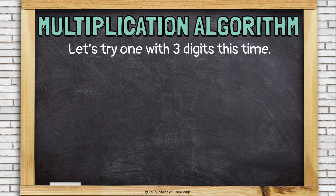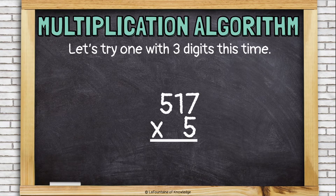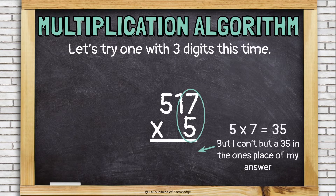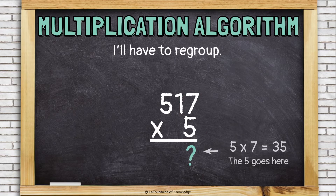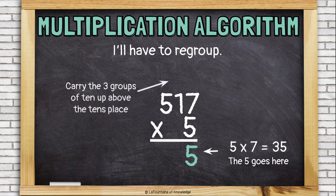Let's try another one, this time with three digits. Same concept. So, 517 times 5. Start with 5 times 7. That's 35. But I can't put a 35 in the ones place of my answer. That won't work. Just like when I'm adding, I'm going to put down the 5. And I'm going to carry the three groups of 10 — I'm going to carry the 3 over to the tens place, because that's what it is: it's 3 tens.